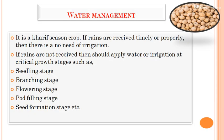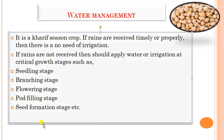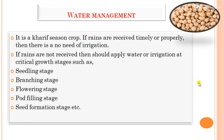For water management, soybean is a kharif season crop, so if rains are timely, no irrigation is needed. If rains are insufficient, apply irrigation at critical growth stages such as seedling, branching, flowering, pod filling, and seed formation stages. Among all stages, flowering and pod filling are the most critical growth stages for irrigation.